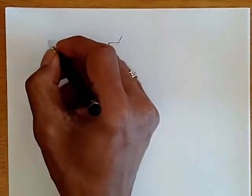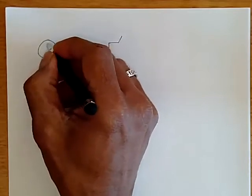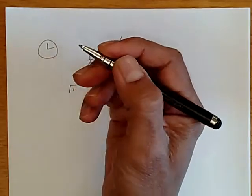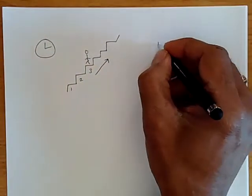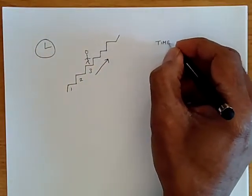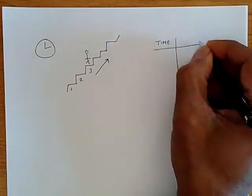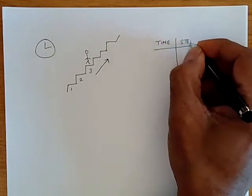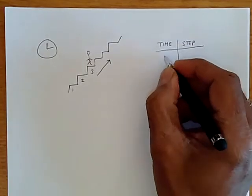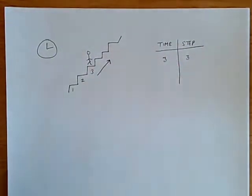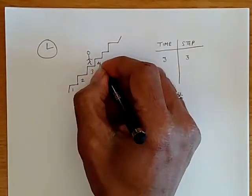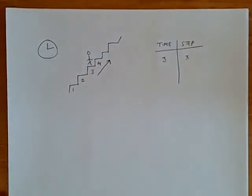And we're going to add a clock which ticks once in a while, once in a minute, once a second, something like that. And we're going to have a table which keeps track of where the person is. So at time 3, the person is at step 3. And the rule is that every time the clock ticks, the person goes to the next step, and they take 0 time to do that.